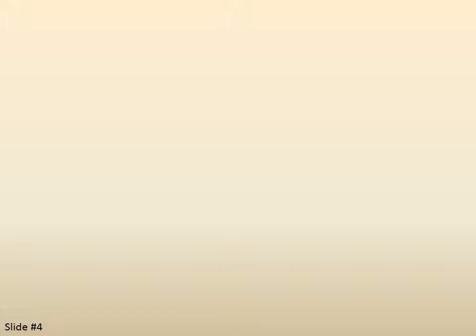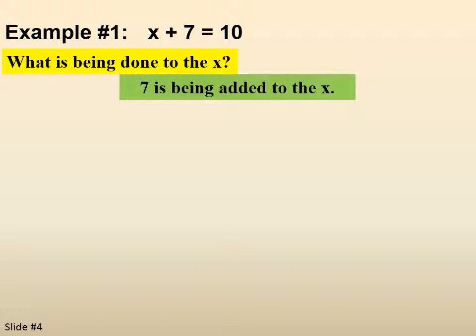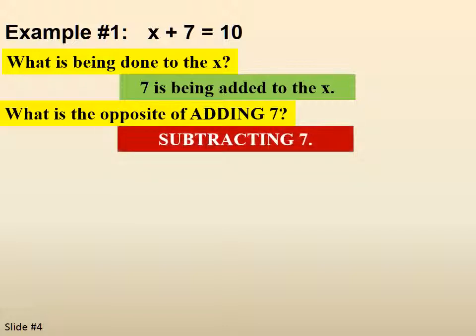Example 1. x plus 7 equals 10. What is being done to the x? 7 is being added to the x. What is the opposite of adding 7? Subtracting 7.